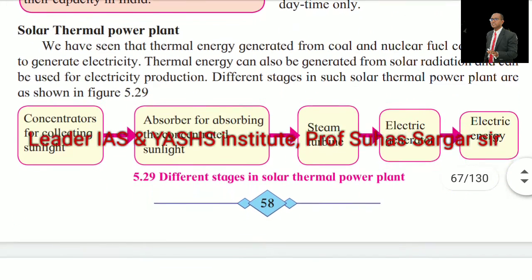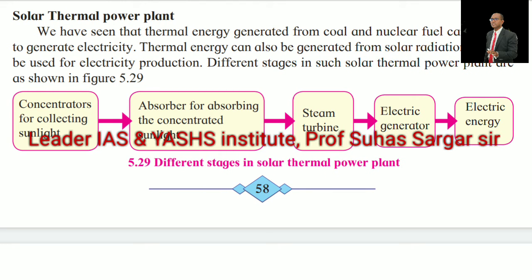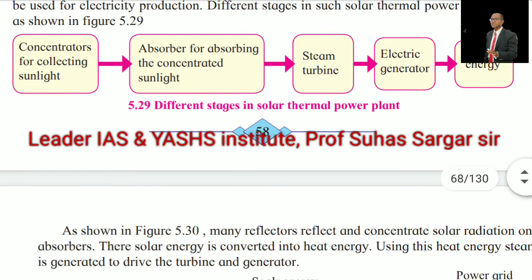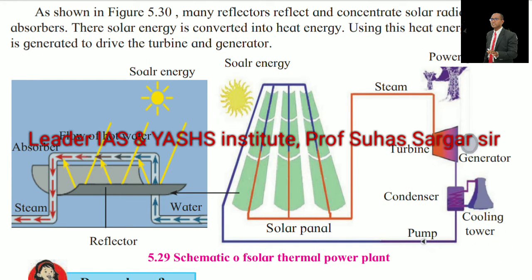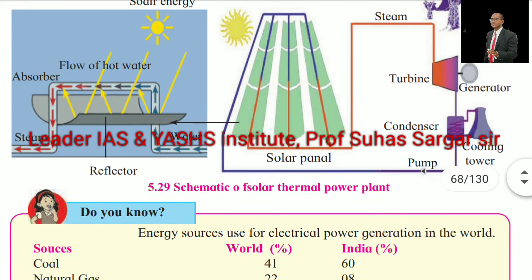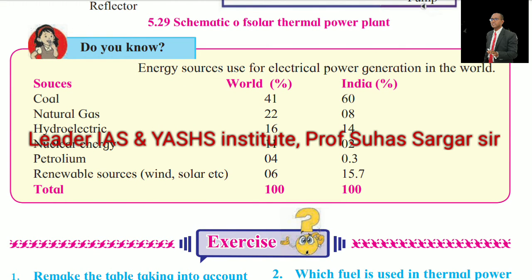Solar thermal power plant: The thermal energy generated from solar radiation can be used for electricity production. Different stages in such a solar thermal power plant are shown in the figures. As shown in the figure, many reflectors reflect and concentrate the solar radiation on an absorber. There, solar energy is converted into heat energy. Using this heat energy, steam is generated to drive the turbine and generator. See the schematic of the solar thermal power plant.